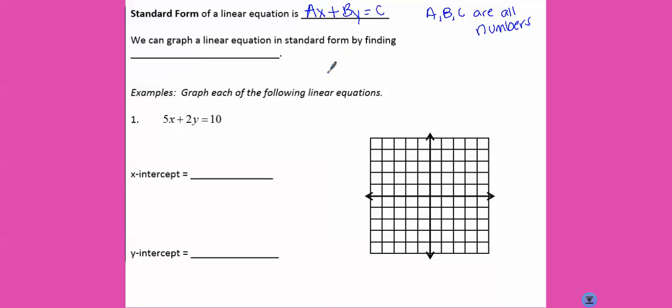We can graph a linear equation in standard form by finding the x and y intercepts. So, to graph each of these, first we're going to find the x intercept. If we're finding the x intercept, that's where y is 0. So we're basically going to ignore that part of the equation for now.